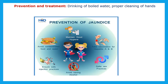Prevention and treatment for hepatitis: drink boiled water only, proper cleaning of hands, maintain good hygiene, proper vaccination against Hepatitis A and B, avoid alcohol, ensure safe injection practices, and avoid contaminated food and water. These are the main precautions for hepatitis or jaundice.